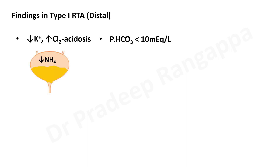There is reduced ammonium excretion in the urine, and in this condition the kidneys are unable to acidify urine because bicarbonate is being excreted and hydrogen is accumulating in the blood. Urine is alkalotic — urine pH more than 5.5 is a classic feature of type 1 renal tubular acidosis.